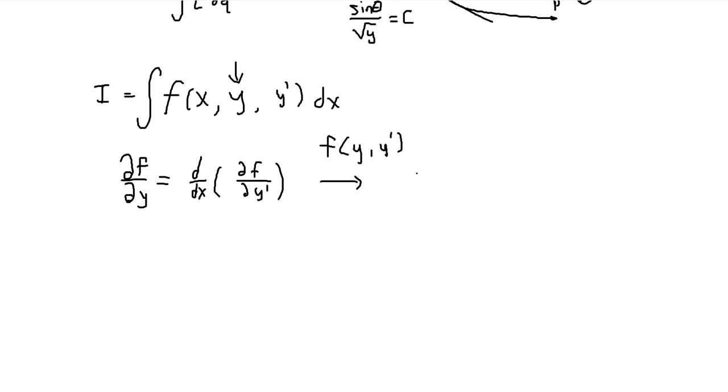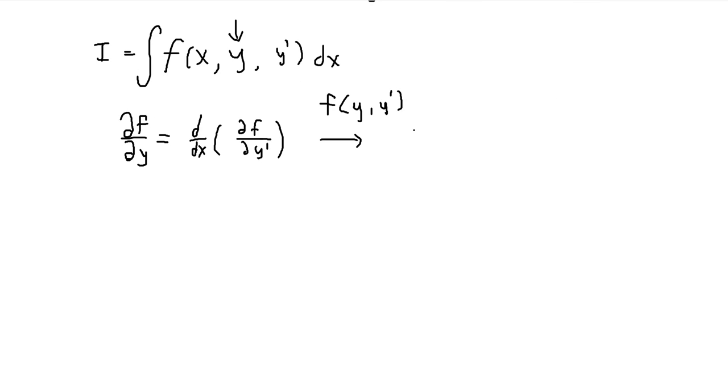then instead, we have f minus y prime times the partial of f with respect to y prime is equal to a constant. So this is if there's no x-dependence, then we can use this formulation of the Euler-Lagrange equation. And so that's what I'll be using in the video.